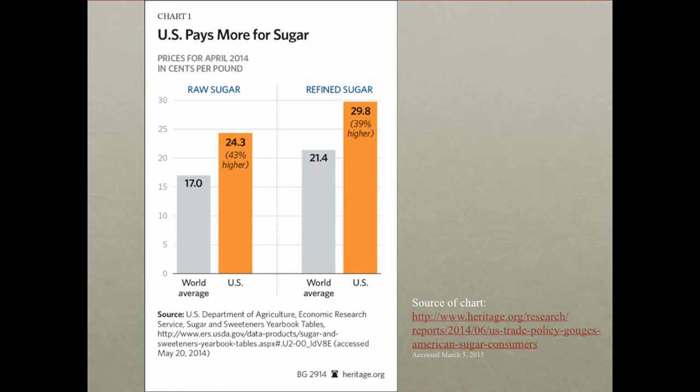The costs of this policy are in higher sugar prices for U.S. consumers. The world average for raw sugar was 17 cents a pound in April 2014; in the United States it was 24.3 cents per pound — a 43% difference. Refined sugar was 21.4 cents in the world and 29.8 cents in the United States — 39% higher. In absolute terms, that's 7.3 cents per pound on raw sugar and 8.4 cents per pound on refined sugar.